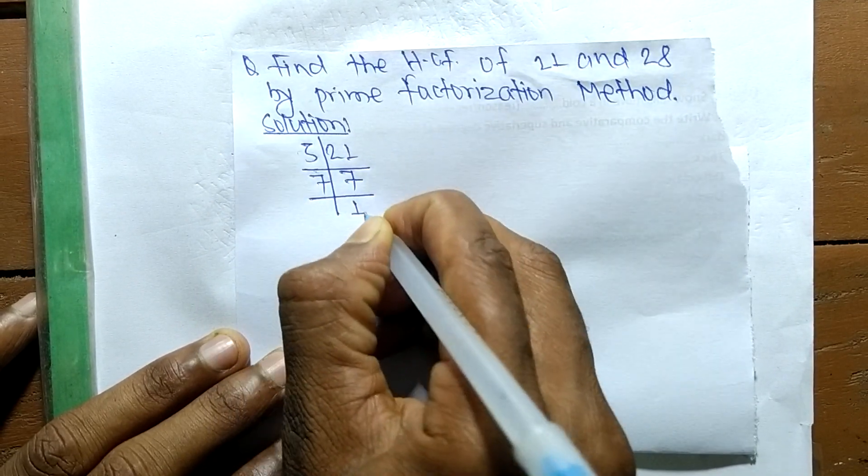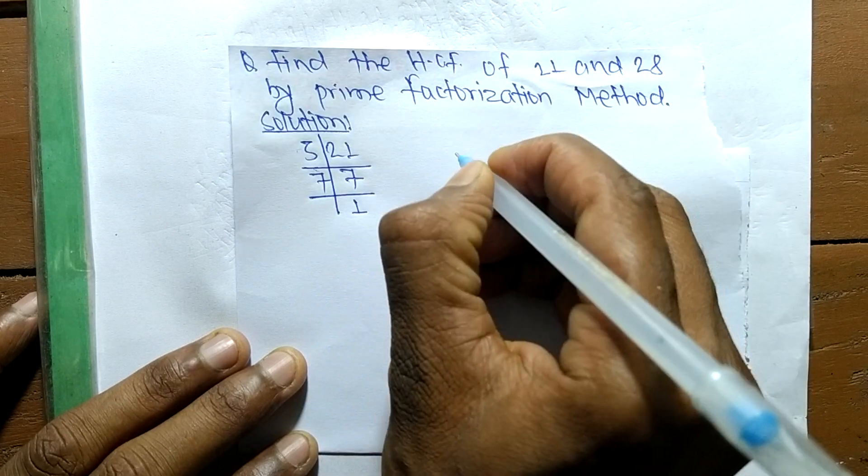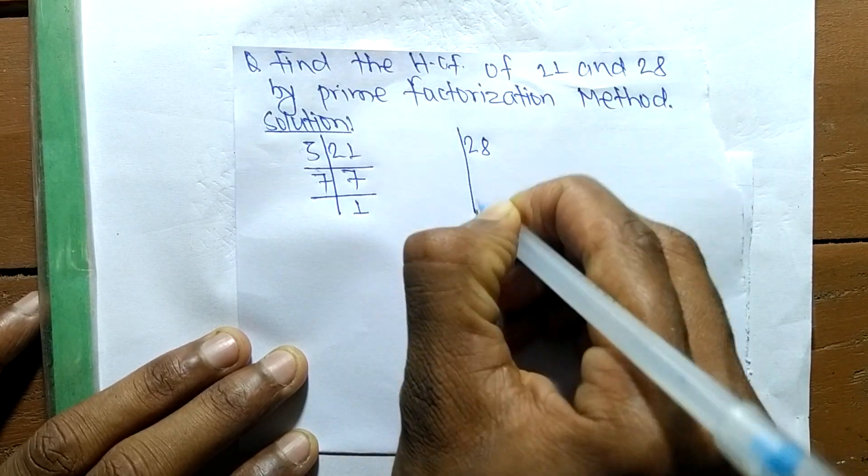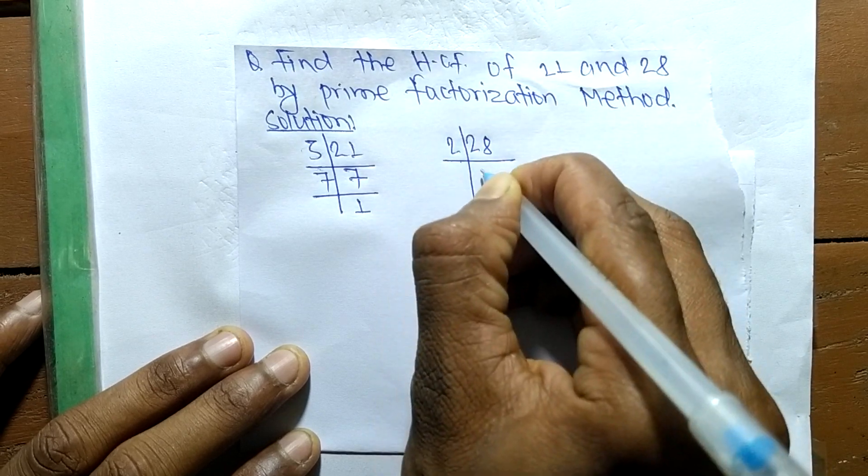The prime factors of 28 are 2 times 14 equals 28.